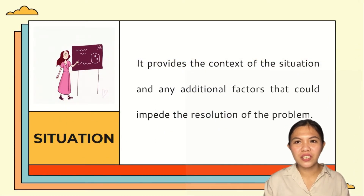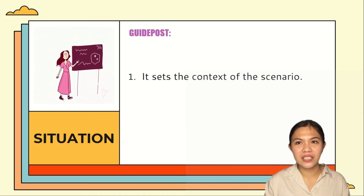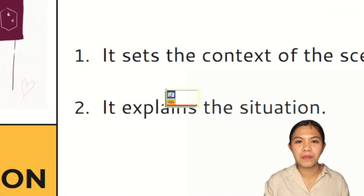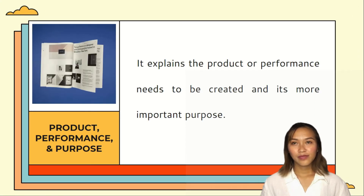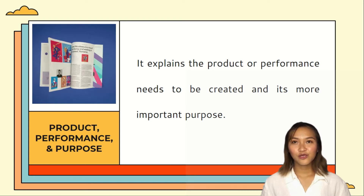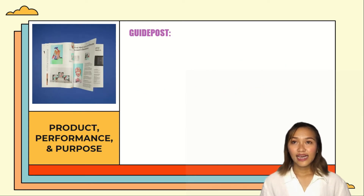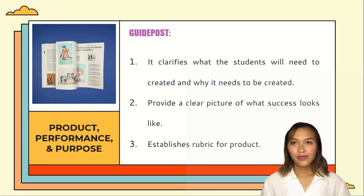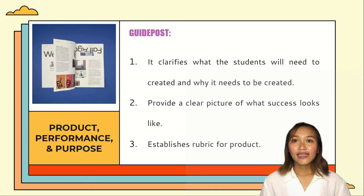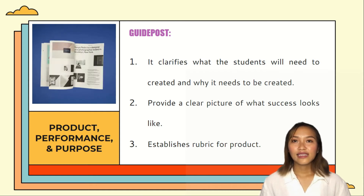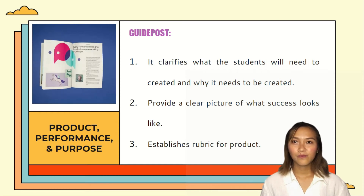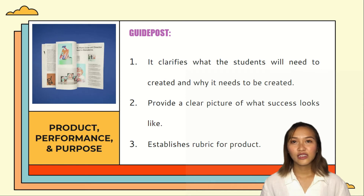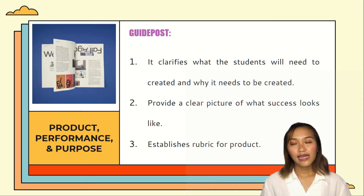Situation provides the context of the scenario and any additional factors that could impede the resolution of the product. As a guidepost, it sets the context of the scenario and explains the situation so students learn about the real-world application for the performance task. Product or performance explains what needs to be created and its important purpose. As a guidepost, it clarifies what students will need to create and why. It provides a clear picture of success and establishes a rubric for the product, designed using multiple intelligences.